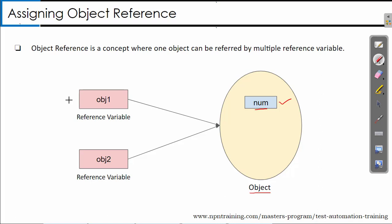We have a reference variable obj1 which points to an object. That means I have access to modify this object through obj1. Let's say I have another object obj2. obj2 also points to the same object that obj1 is pointing to, meaning obj2 also has access to modify the data inside that object. So you have two reference variables obj1 and obj2 pointing to the same object.